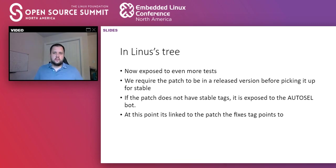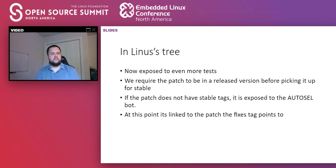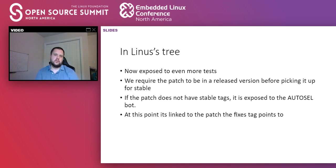Once the patch has passed the maintainer's tree and is in Linus's tree, it's getting even more testing — now it's actual developers taking this kernel tree, building it, and running it on their laptops and servers. There's much more exposure to different workloads and hardware. This is the bar we're trying to achieve when taking patches for stable: the patch was tested and reviewed enough to get into Linus's tree. We really appreciate the work people do testing there, and it's important that anything going into stable has been tested by those people.